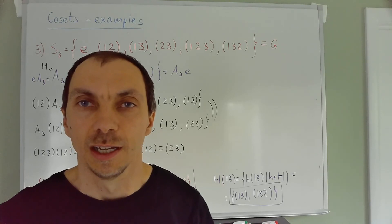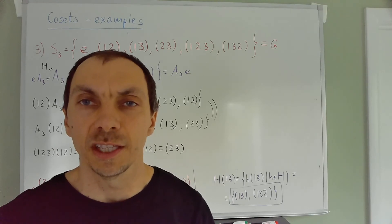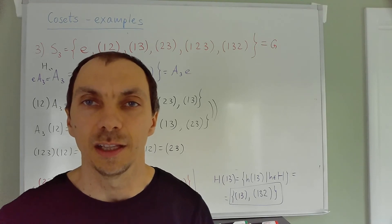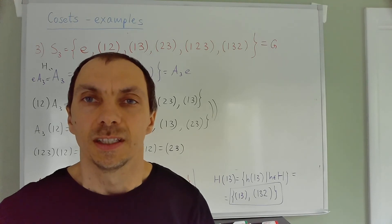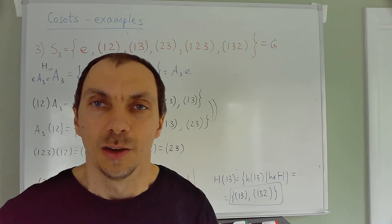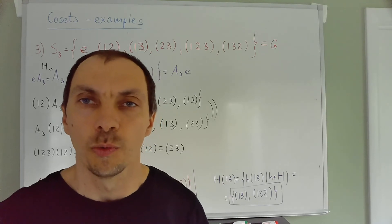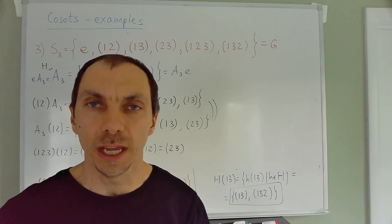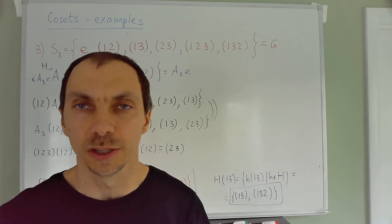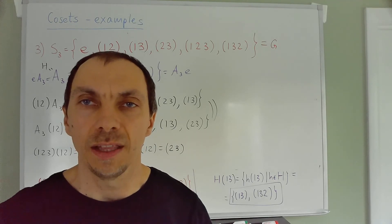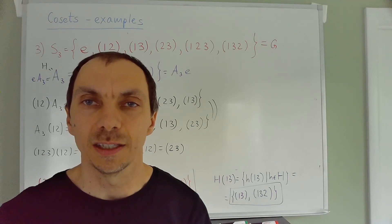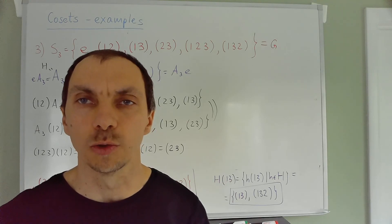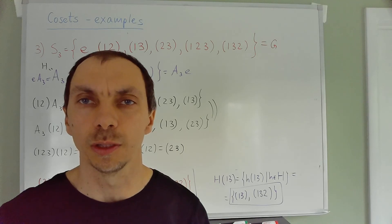Later we will see that when left cosets are equal to right cosets, you can build something nice — analogous to how congruence classes let us form a ring, here you'll be able to speak of a group of cosets. Cosets themselves will form a group, which will be called a quotient group.